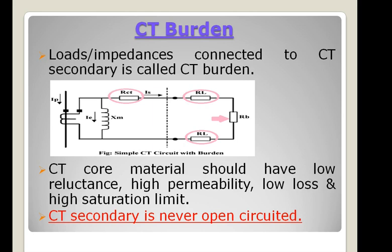You may face this question in an interview: why is CT secondary never open circuited? Open circuiting the CT secondary results in zero secondary current and hence reduced back EMF. If by mistake the CT secondary is open circuited, the secondary peak voltage may reach up to several kilovolts. The working flux increases and the CT core gets saturated. The CT primary and core get overheated, and high voltages are induced in the secondary side by electromagnetic induction. This is very dangerous for working personnel on the secondary side. Hence CT secondary should never be disconnected when current is flowing in the primary side.